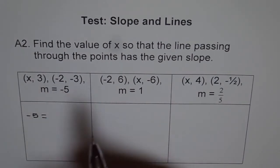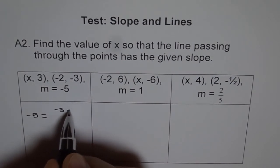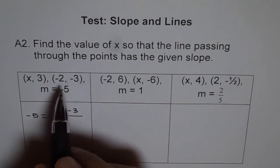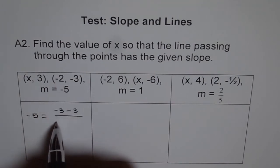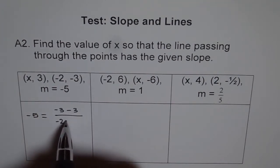y2 minus y1, that is the slope. So minus 3 minus 3 divided by x2 minus x1, which is minus 2 minus x.